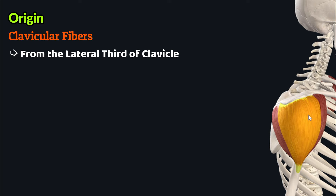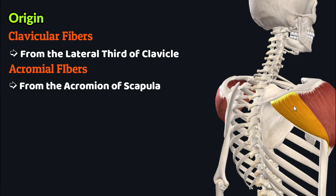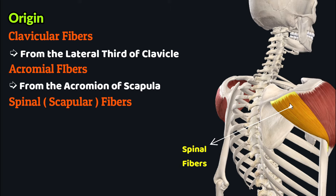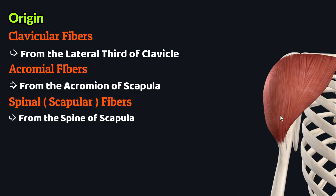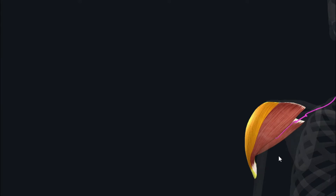On the lateral aspect are the acromial fibers, which originate from the acromion of the scapula. Towards the posterior side are the spinal or scapular fibers, which originate from the spine of the scapula. These three sets of fibers converge to form a single short tendon, which inserts over the deltoid tuberosity on the lateral aspect of the humerus.